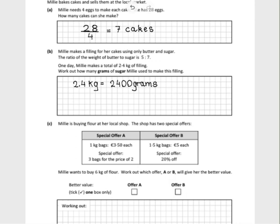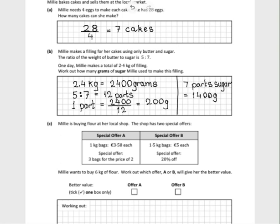What we need to do now is get one part. So if we have 5 and 7, add them together and divide into the total. So let's do that. 5 plus 7 is 12, and 12 into 2,400 grams will give us 200 grams.